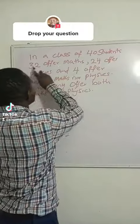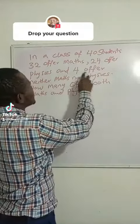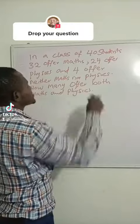Okay, listen. In a class of 40 students, 32 offer mathematics, 24 offer physics, and 4 offer neither math nor physics. How many offer both math and physics?